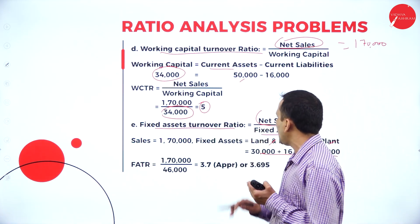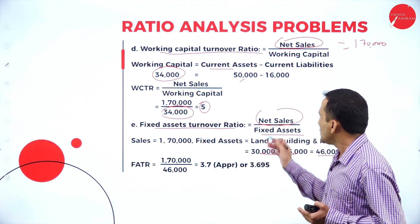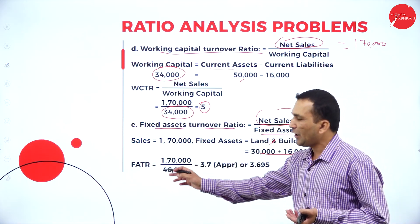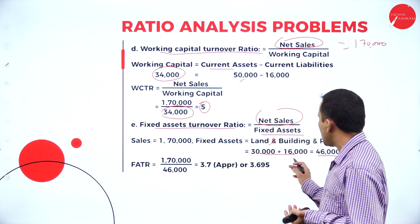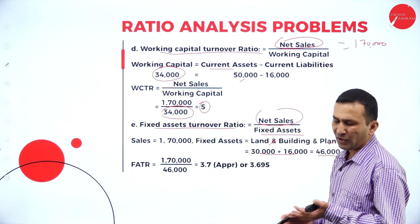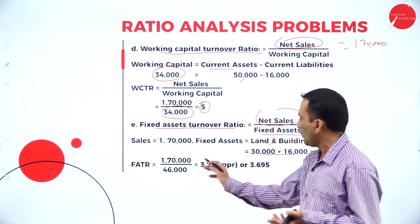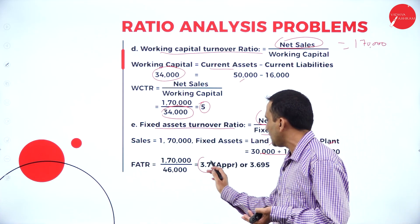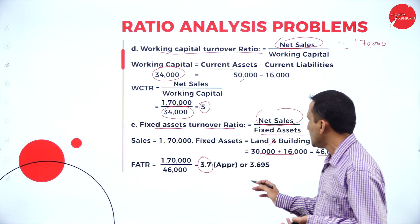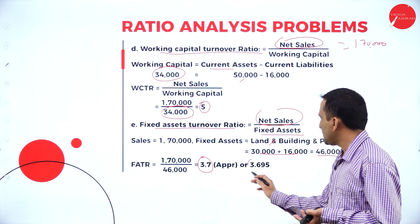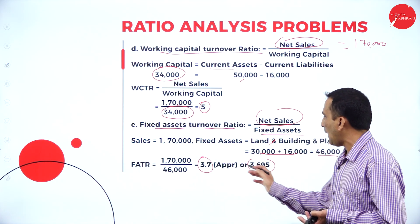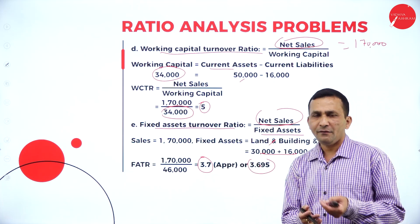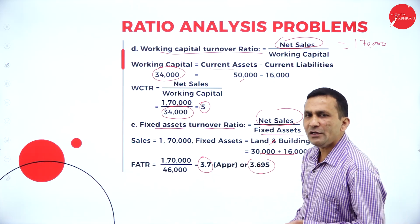Now simplifying the formula: net sales 1,70,000 divided by fixed assets 46,000. If you divide, you get 3.695, approximately 3.7.